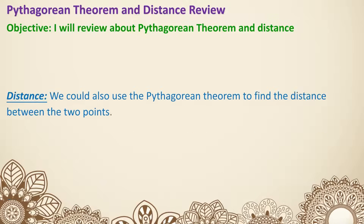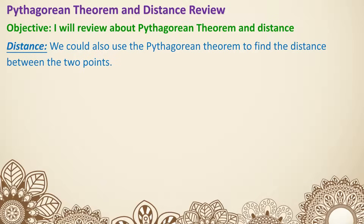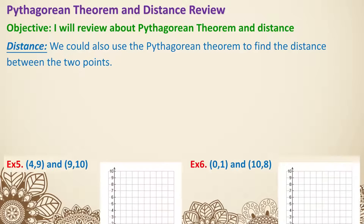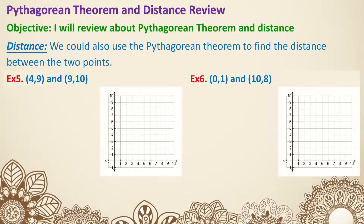Moving on — distance. We can also use the Pythagorean theorem to find the distance between two points in a coordinate system. Let's look at examples five and six. We have the points (4, 9) and (9, 10). Since they're in a grid coordinate system, we can find a right triangle to find the distance.